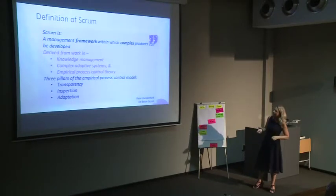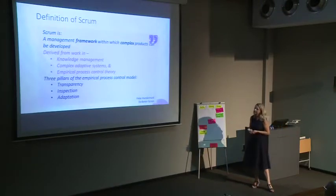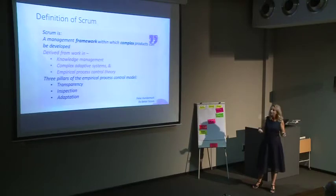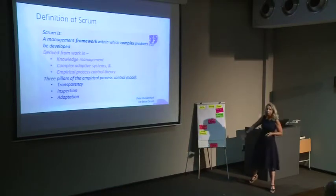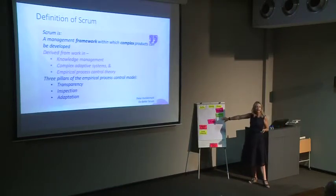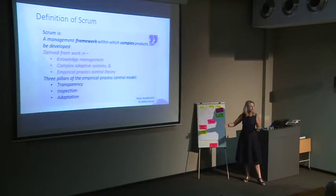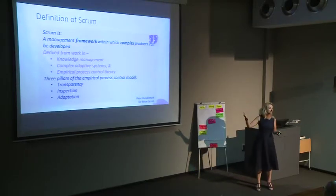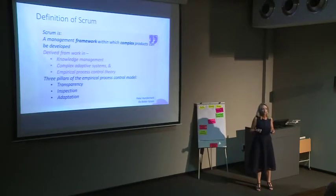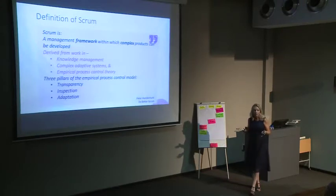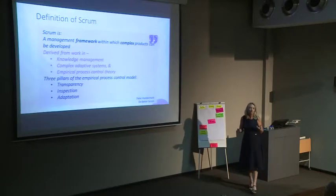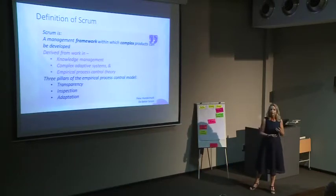Scrum is a management framework within which complex products can be developed, derived from knowledge management, complex adaptive systems, and empirical process control theory. The three pillars are transparency, inspection, and adaptation. Because we have these boards, people know exactly what we're working on and what we're delivering — we show them every two weeks, so transparency is there. Inspection means customers can look at the products and we constantly make sure we test. And adaptation means if requirements change, we change — and if something didn't work this sprint, we adapt and try something new.